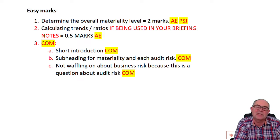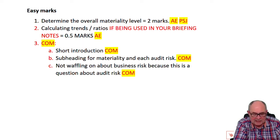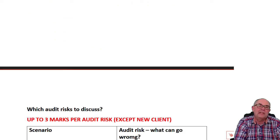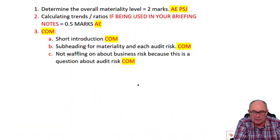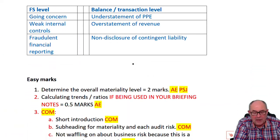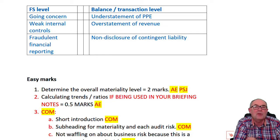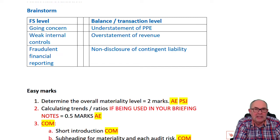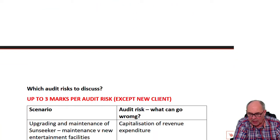Now, how do we discuss the audit risks? Your brain is ready and geared — you know the sort of thing you're going for from that brainstorm. But what I then need to do is drive my audit risks out of the scenario as far as possible in the time allowed. The examiner says there are up to three marks for each audit risk if you've done it properly.